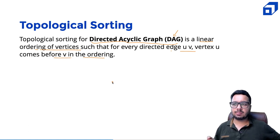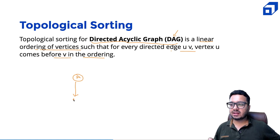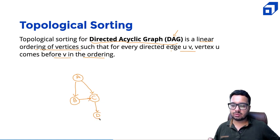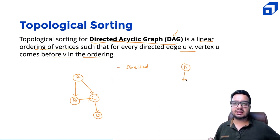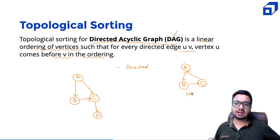Let me first understand what is a directed acyclic graph. Consider a graph where A has a directed edge to B, A has a directed edge to C, B has a directed edge to C, and C has a directed edge to D. This graph is directed and acyclic — it should not contain a cycle. A cyclic graph, where A connects to B, B to C, and C back to A, is not a DAG.